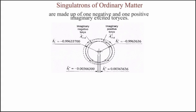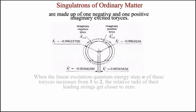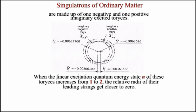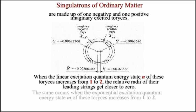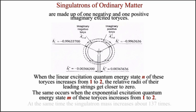Singulatrons of ordinary matter are made up of one negative and one positive imaginary excited torese. When the linear excitation quantum energy state n increases from 1 to 2, the relative radii of their leading strings get closer to 0. The same occurs when the exponential excitation quantum energy state m increases from 1 to 2. At the same time, the singulatron mass increases about 137 times.